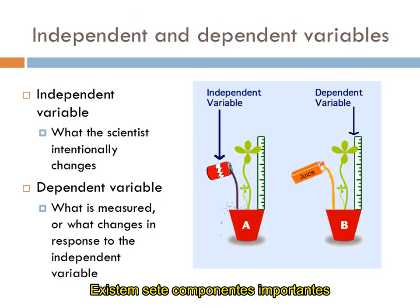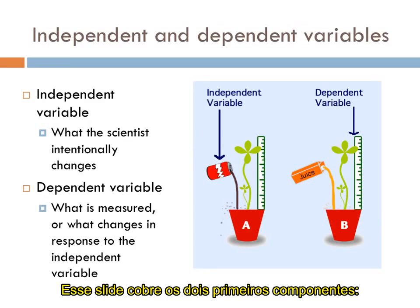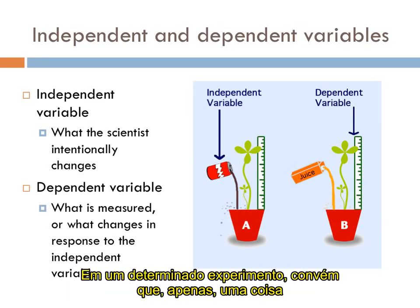There are seven important components to setting up a scientific experiment that will be described on the next few slides. This slide covers the first two components: the independent and dependent variables.